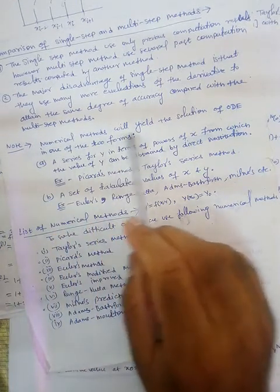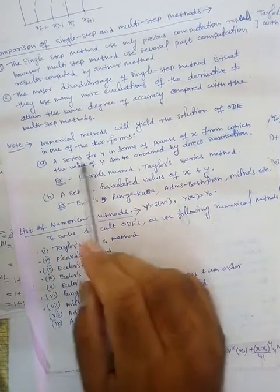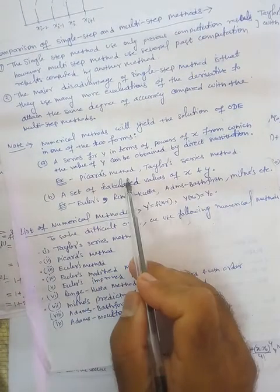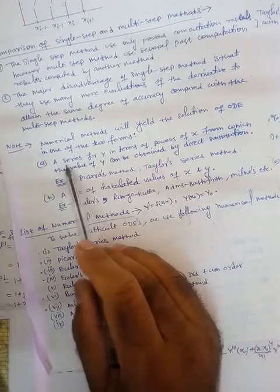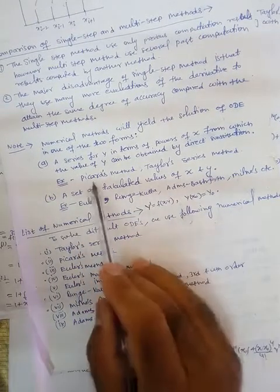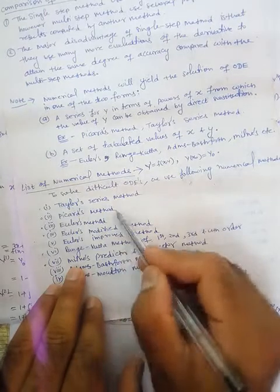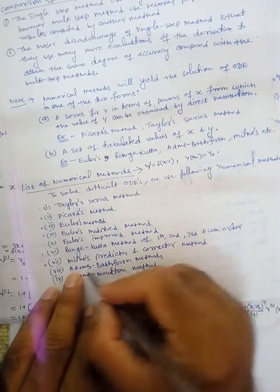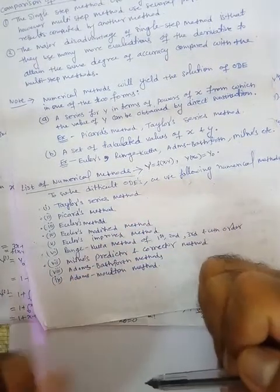Note that numerical methods yield the solution of the ODE in one of two forms: first, a series for Y in terms of powers of X (Taylor series) — this includes Picard's method and the Taylor series method; second, as a set of tabulated values. The methods we will discuss are: Taylor series method, Picard's method, Euler's method, Euler's modified method, Runge-Kutta method, and Milne's predictor-corrector method.